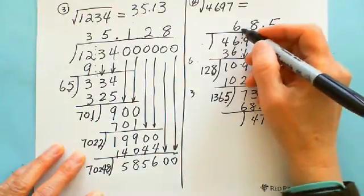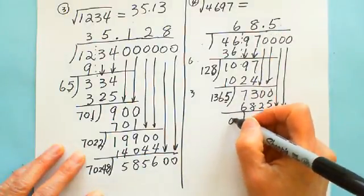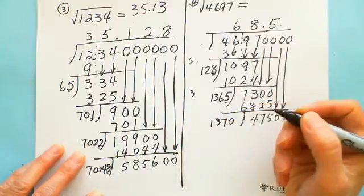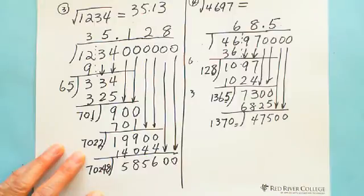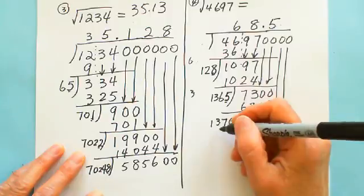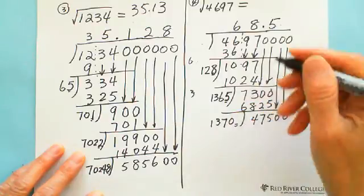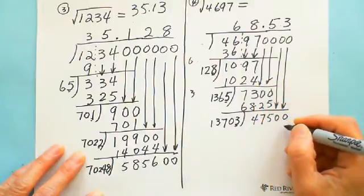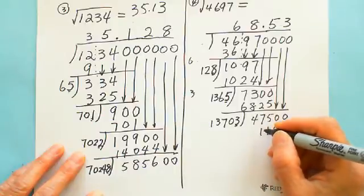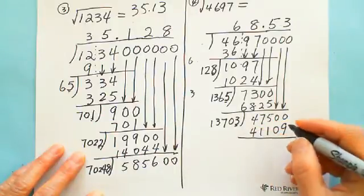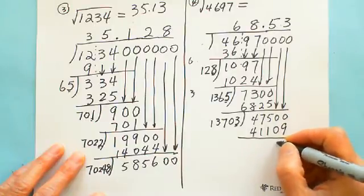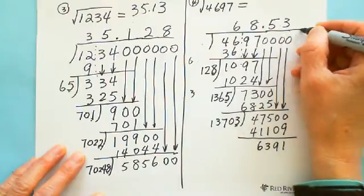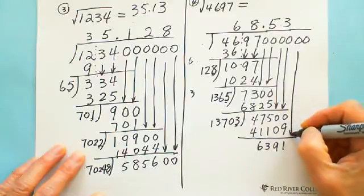Divide again. Double these three digits: double 685, giving 1370. The next digit is 0 on the carry side. So the new divider is 1370 something. Estimate the last digit: if you try 4, 4 times 13 gives something around 52 — that works. If you try 3: 3 times 1373 gives a result of around 4119. Working through — the remainder comes out to 1963. To decide whether to round up or drop, add two more zeros and continue.